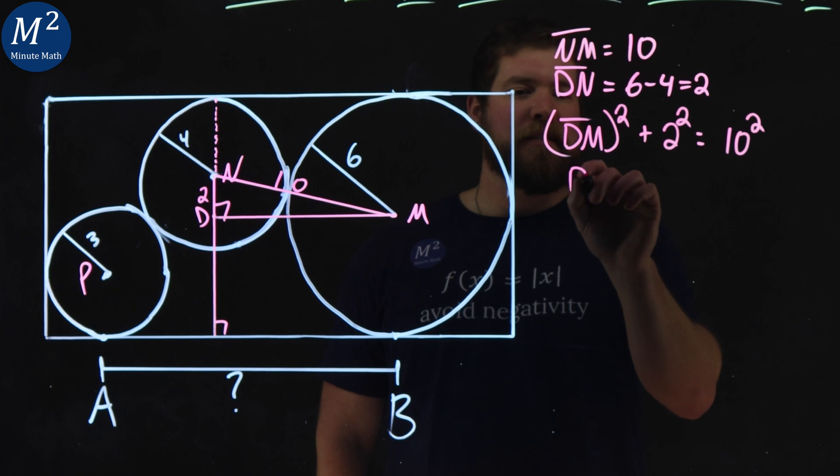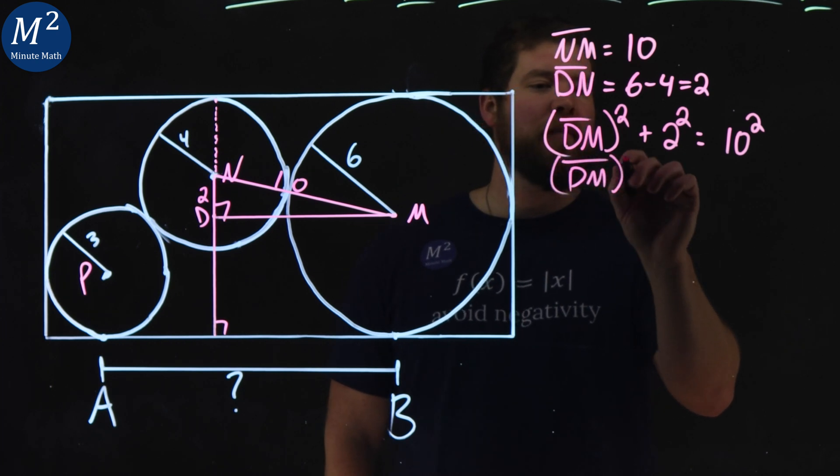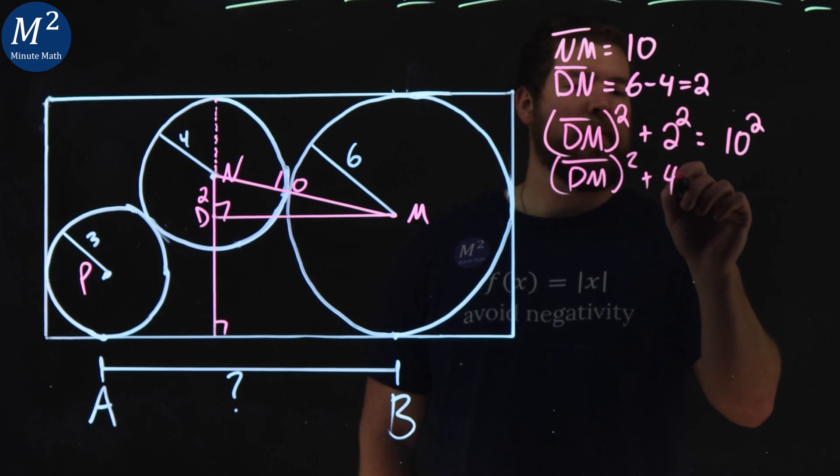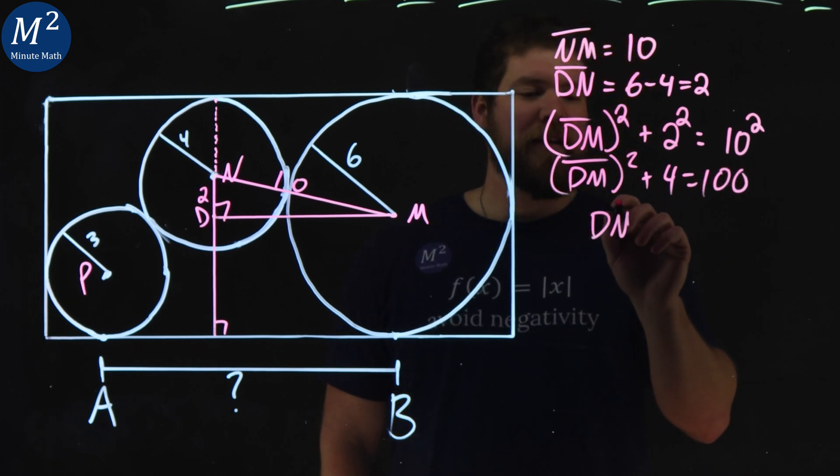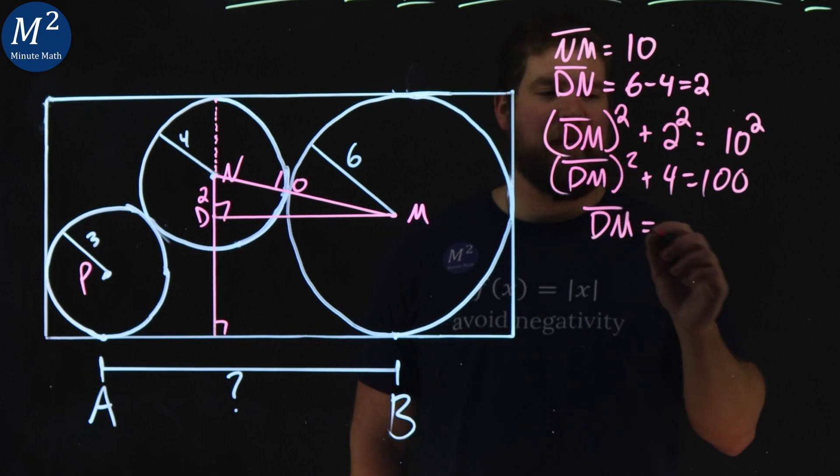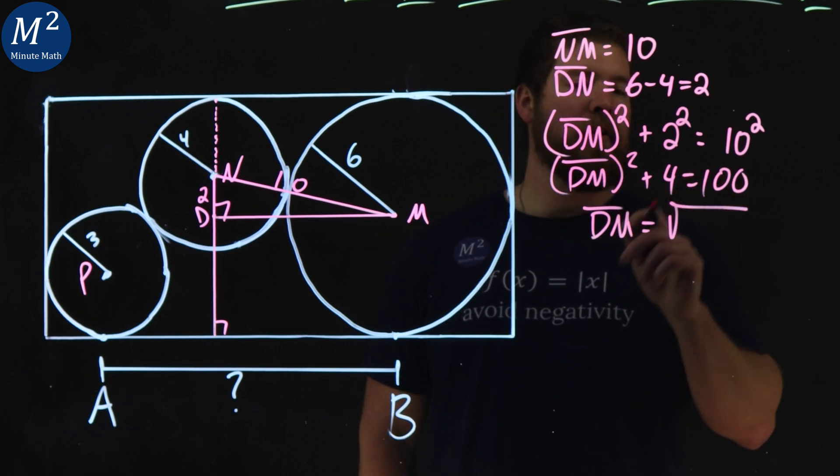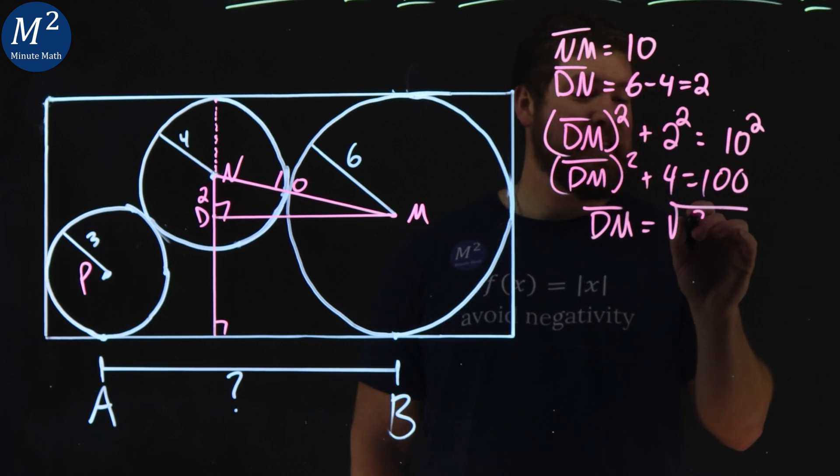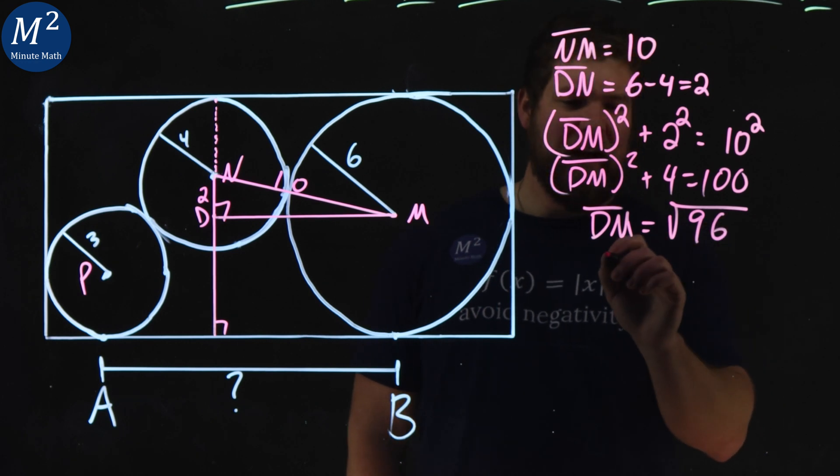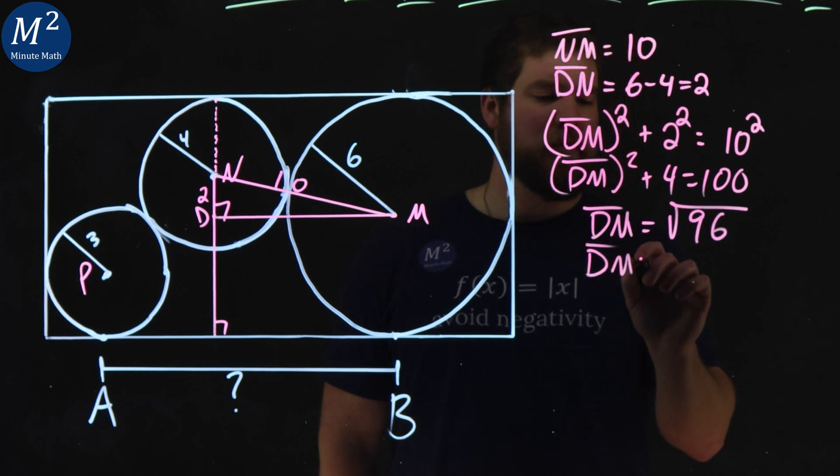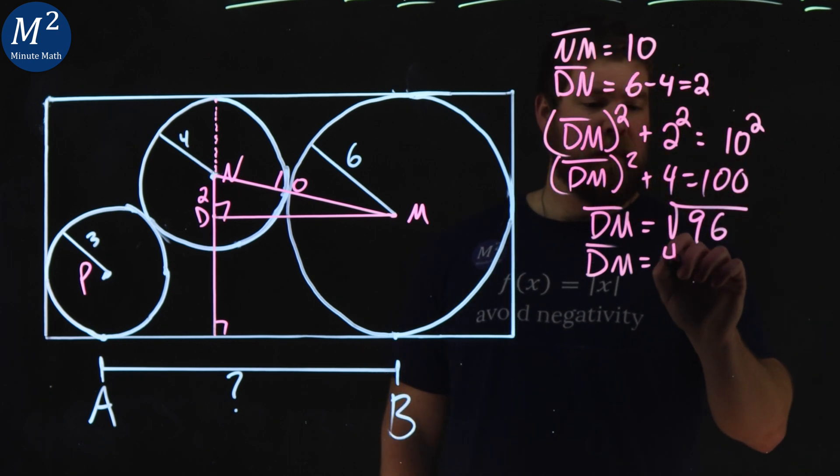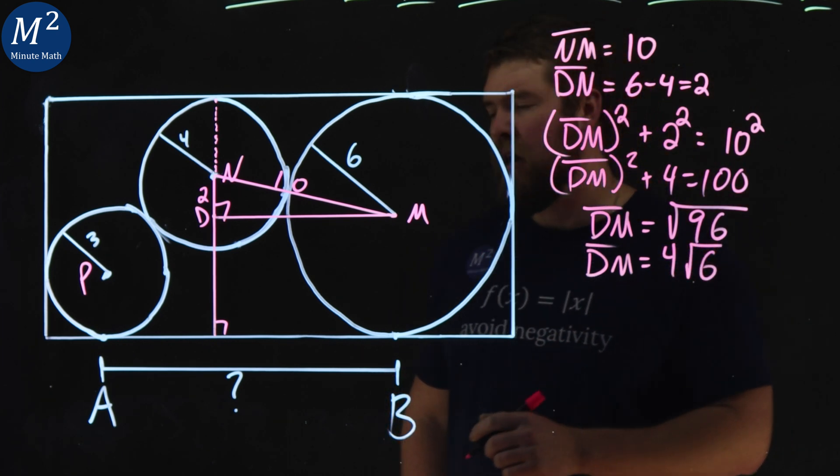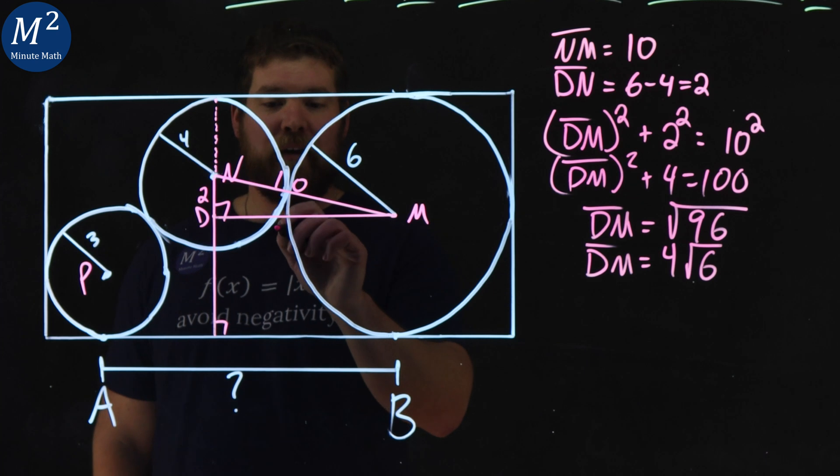Subtract the 4 to both sides, DM, and we take the square root. I think you can understand that little skip there. Square root of 100 minus 4 is 96, and we get the square root of that, and that comes out to be simplified to be 4 square root of 6. So the length of DM is 4√6.